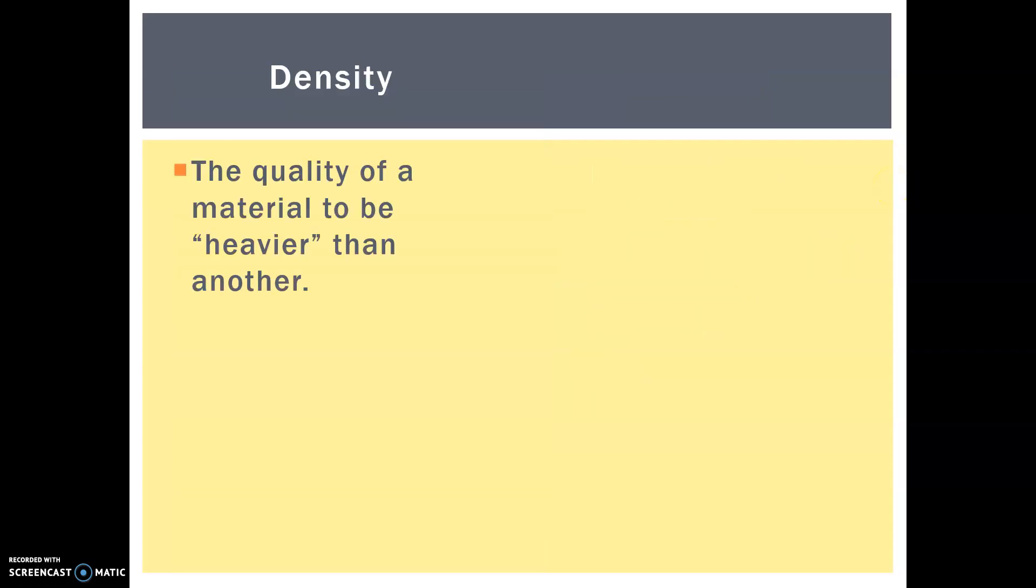Next we have density. This is the quality of a material to be heavier than another. Now obviously mass and density are different things in scientific terms. And density is in fact measured by mass per unit volume, so for instance kilograms per meters cubed.